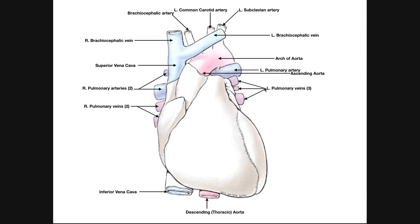Now for the veins, which bring blood back to the heart. The first is the superior vena cava, delivering deoxygenated blood directly back to the right atrium. The superior vena cava collects blood from two major sources: the left brachiocephalic vein and the right brachiocephalic vein. Note that there are two brachiocephalic veins but only one brachiocephalic artery. Both brachiocephalic veins bring blood into the superior vena cava, which then returns it to the right atrium.